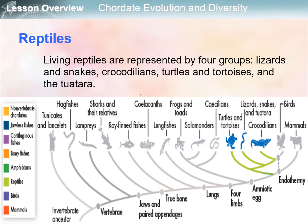Living reptiles are represented by four groups: the lizards, the snakes, the crocodilians, turtles and tortoises, and the tuatara. If you look at the figure, you can see one lineage for each group: turtles and tortoises, lizards, snakes and tuatara, and crocodiles.